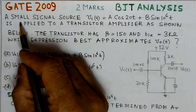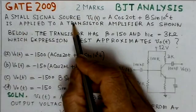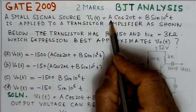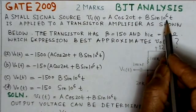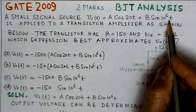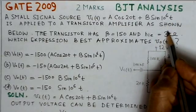First we will read out the problem. A small signal source V_i(t) = A cos(2ωt) + B sin(10^6 t) is applied to a transistor amplifier as shown below.